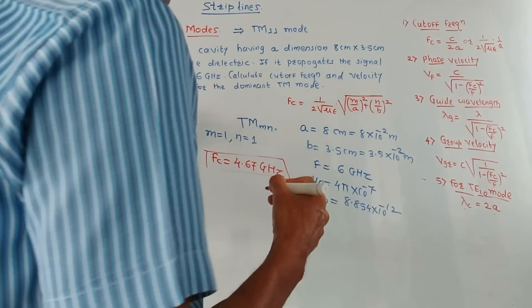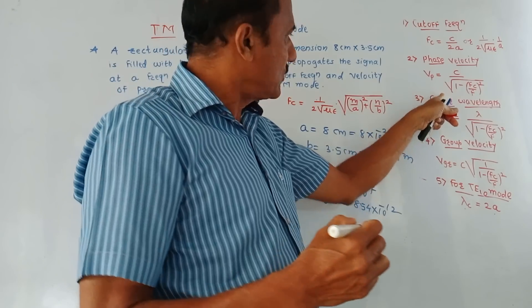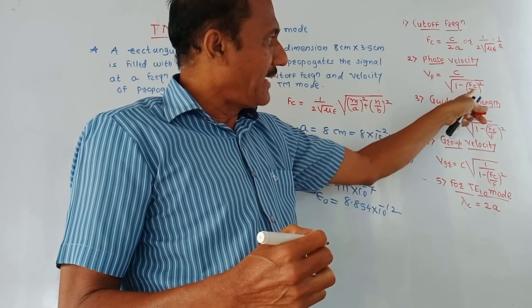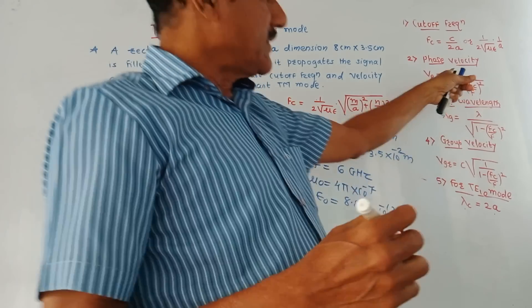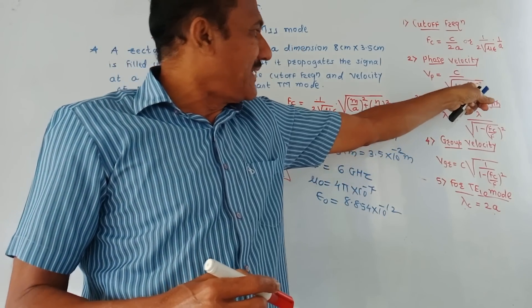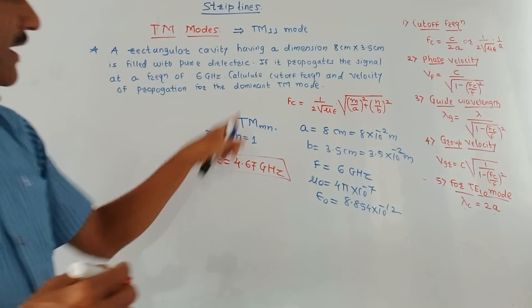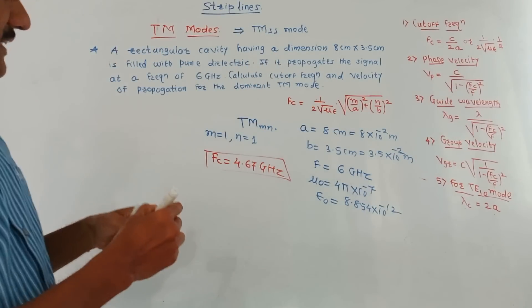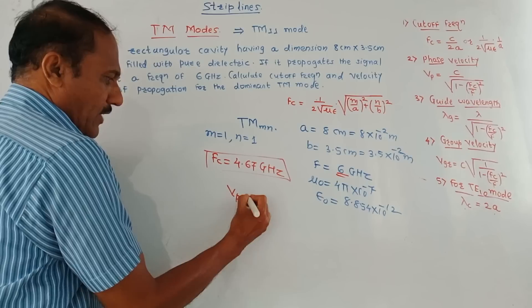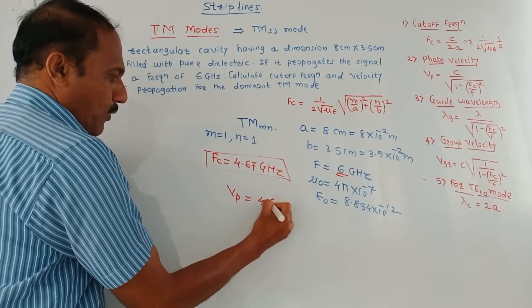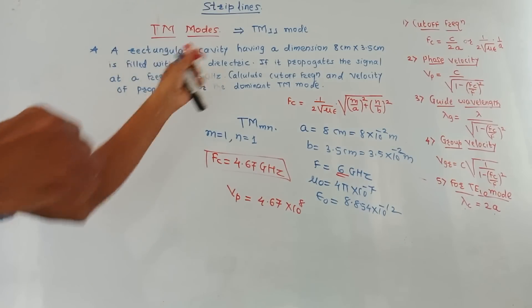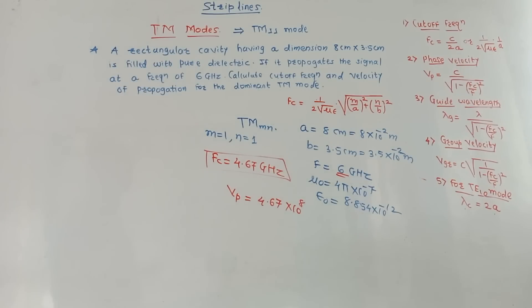Second thing, it is asked to calculate velocity of propagation, that is same as the phase velocity. We have already made formula. So it is C upon square root of 1 minus FC by F bracket square. C is the speed of light, which is 3 into 10 raised to 8, divided by square root of 1 minus FC. Just now we calculated this value of FC. F is the operating frequency. This operating frequency is 6 gigahertz. So you just have to put the values. So value of velocity will be 4.67 into 10 raised to 8. This is the way to solve the numericals related to transverse magnetic mode.